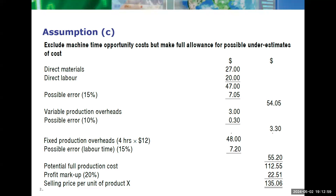We add fixed production overheads at $12 times four hours, giving $48. Because fixed overheads are allocated on the basis of labor time — assuming that the cost driver is labor hours — we include another 15% error margin on this as well, giving an additional $7.20. Now we have factored in the error margin for direct costs, variable production overheads, and fixed production overheads. Taking the totals and adding a 20% profit margin gives a selling price of $135.